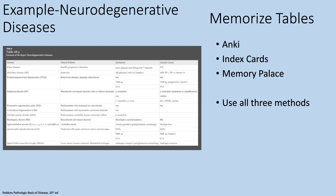What about tables? For example, I have a table from the neurodegenerative disease chapter of Robbins here — diseases are listed on the left with clinical pattern, inclusions, and genetic causes. Yes, it is painful to memorize things, but if you want to do well on your exams and board exams, you're going to have to do a certain amount of memorization. Some students use Anki; I personally used index cards in medical school. I like index cards because writing things down contributes to remembering, and when additional information came up — for example an additional disease to add to a table — I would just pull out the index card and add it. By the time my boards came around, I had more detailed cards than what was in the book.